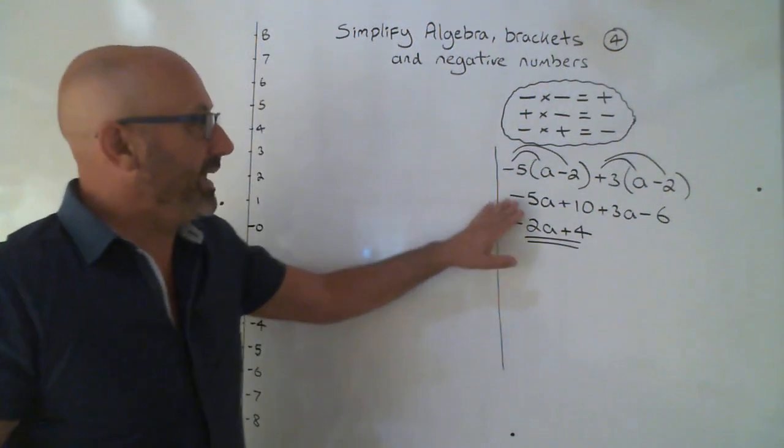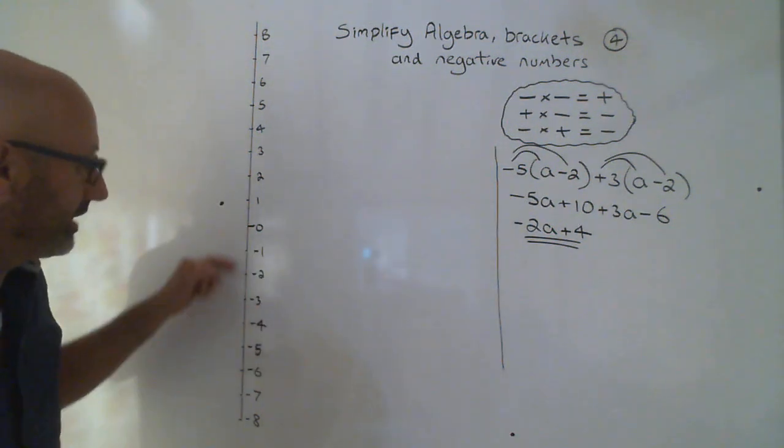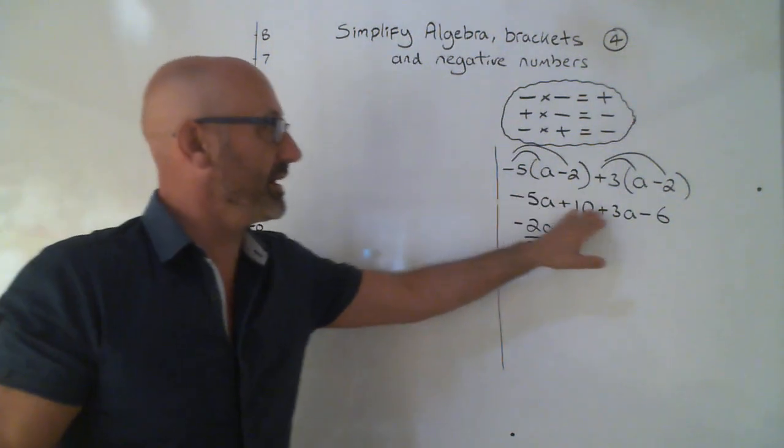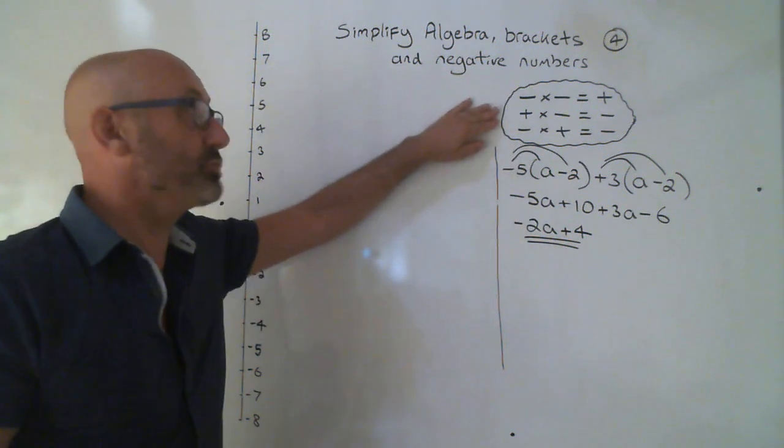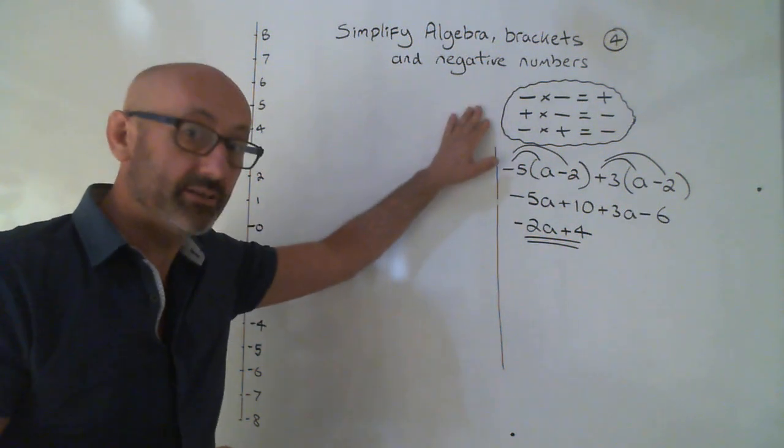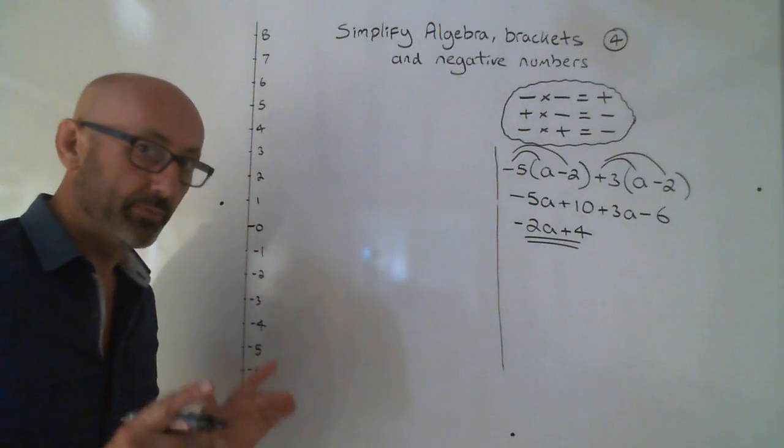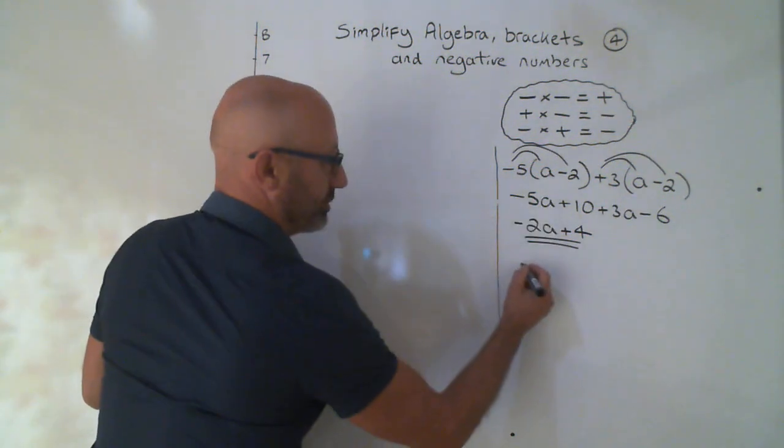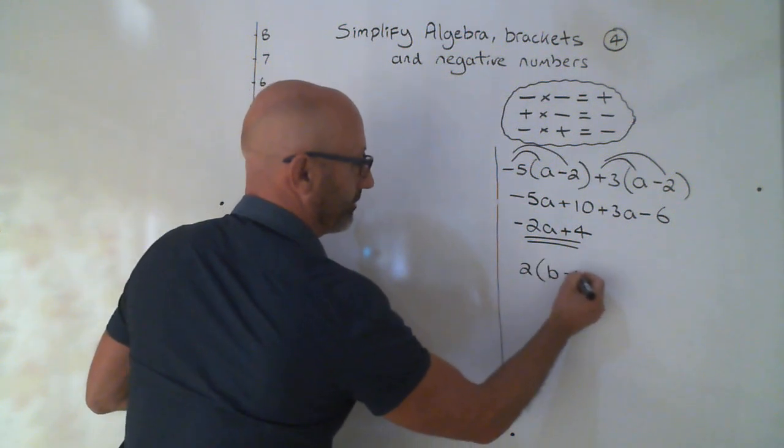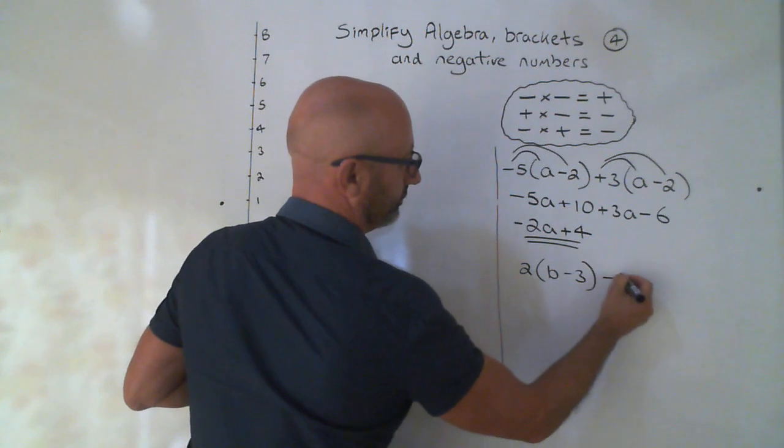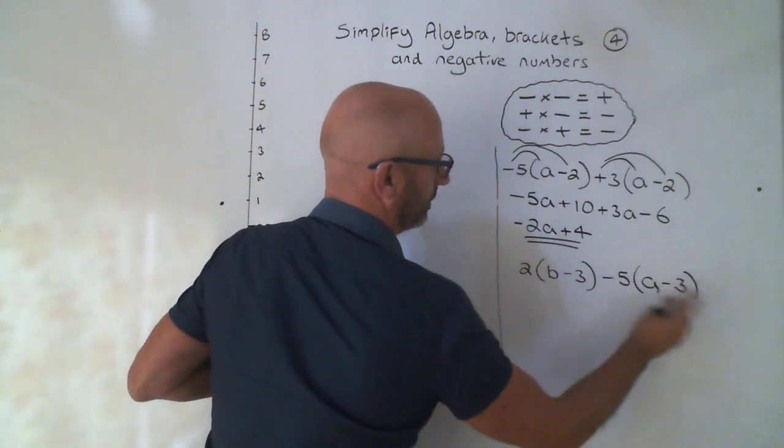So please, don't get this rule here, where you go minus five add three. Don't confuse the minus five A and the plus three A with this here. This rule here is just when you're timesing out the brackets. It is not when you are boinging up and down the number line. Look, look at this question here. Let's do another question.